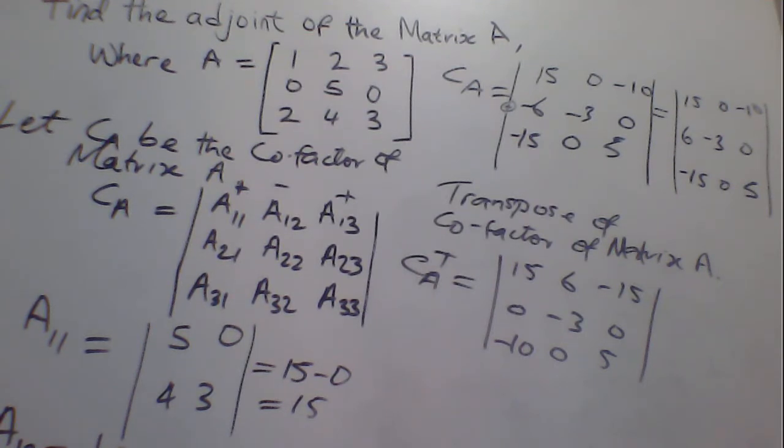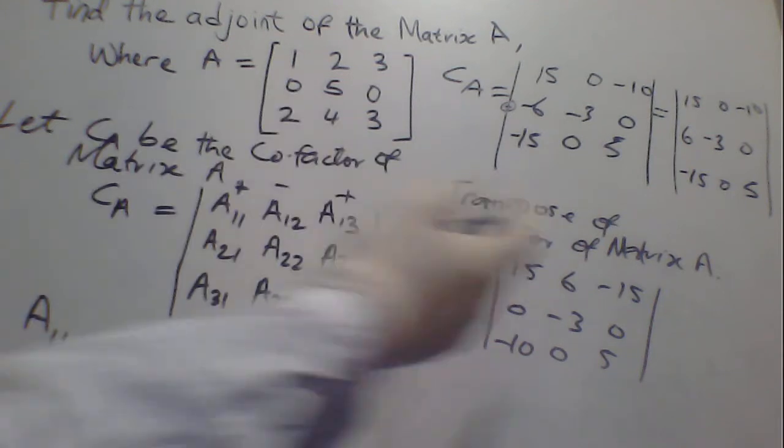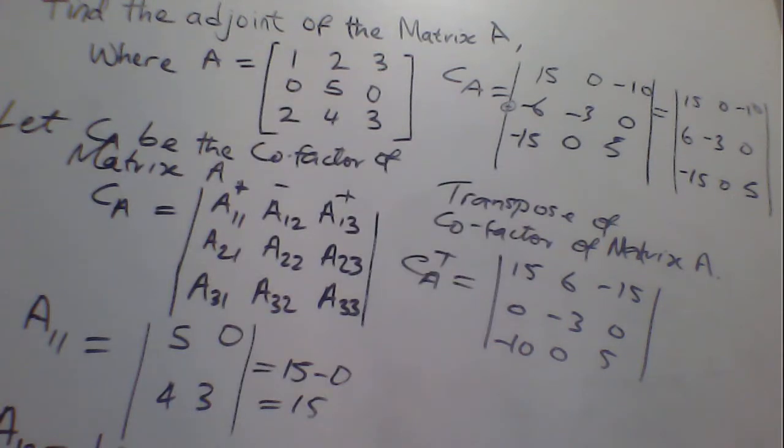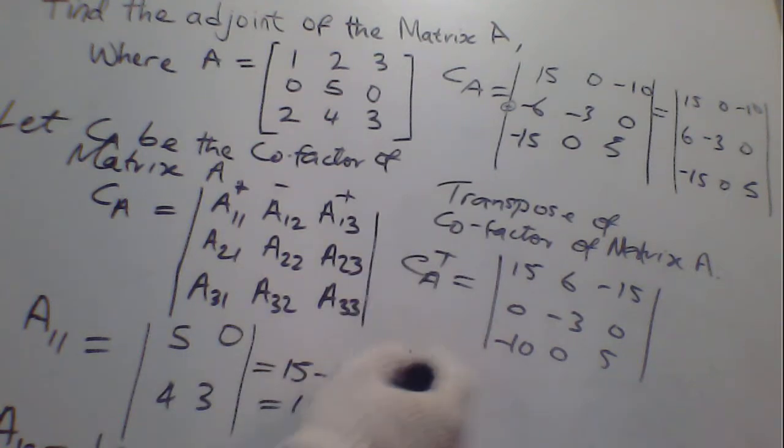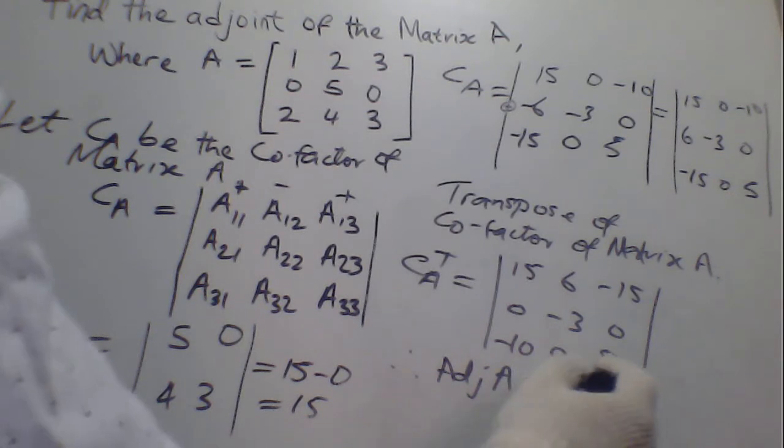So once we have arrived at this point, this is the adjoint of the matrix A. So therefore, adjoint A is equal to what? The transpose of what? The cofactor of matrix A.